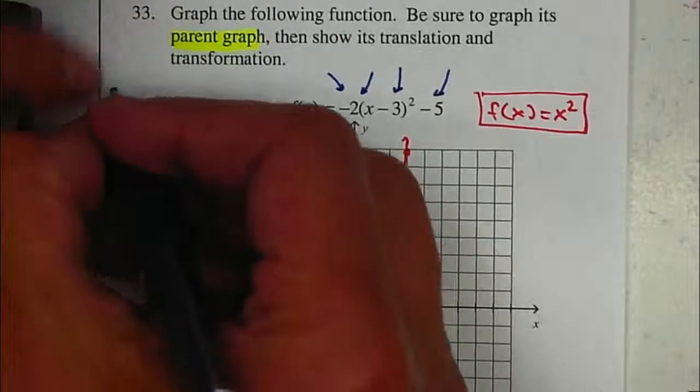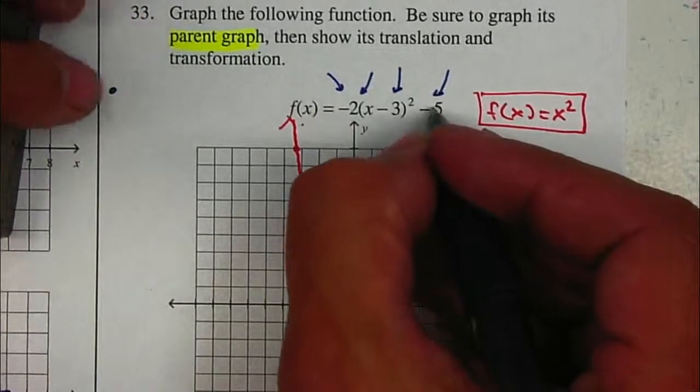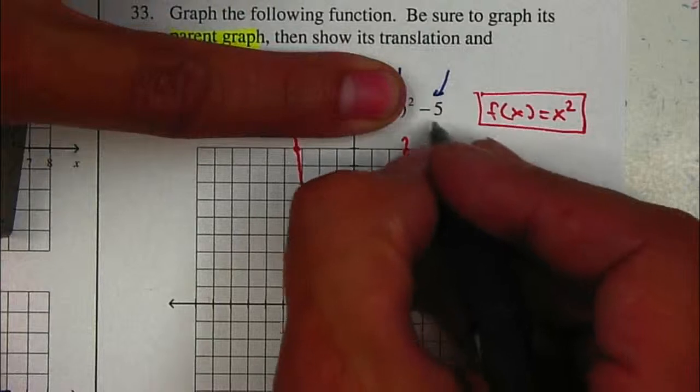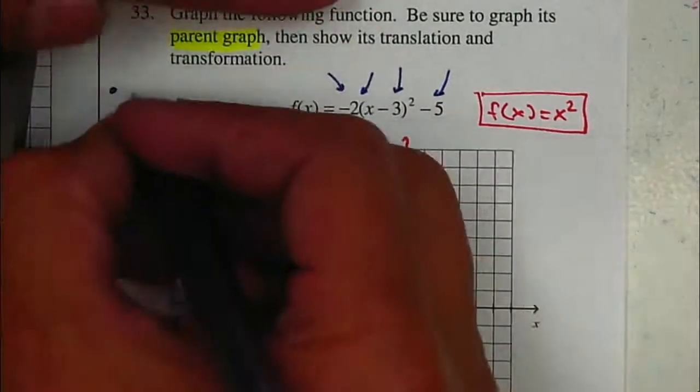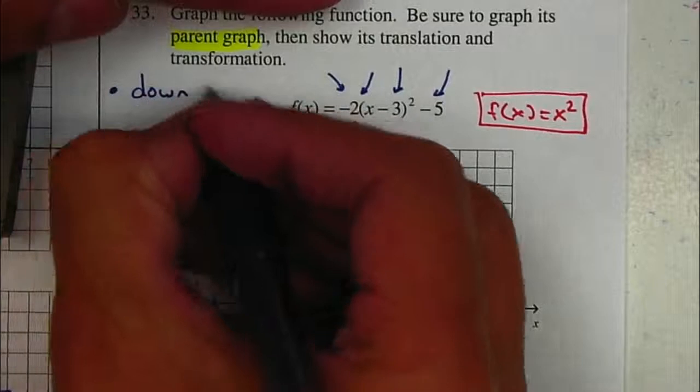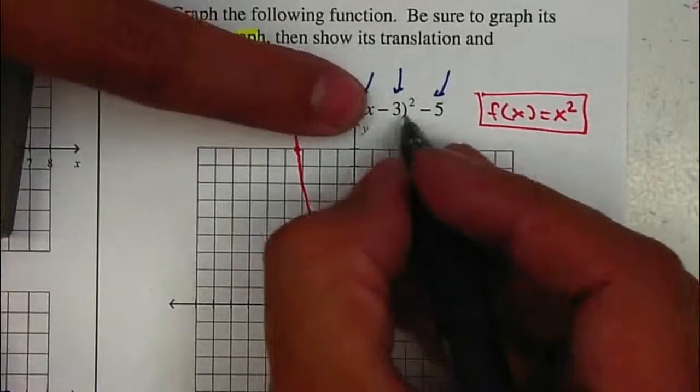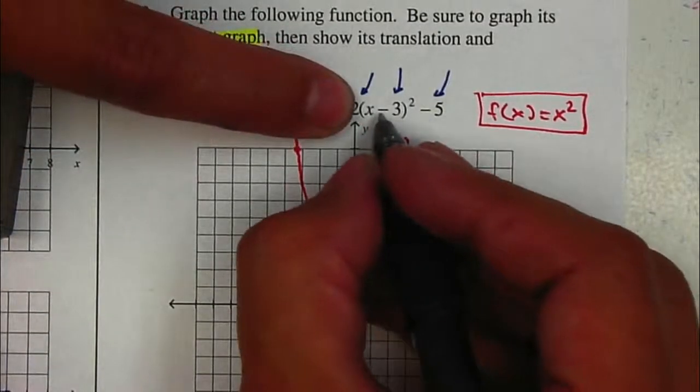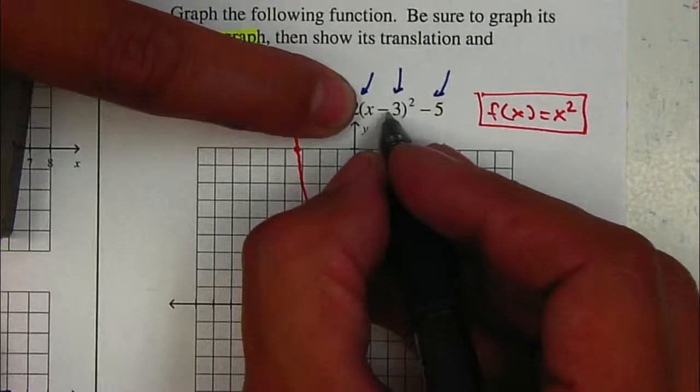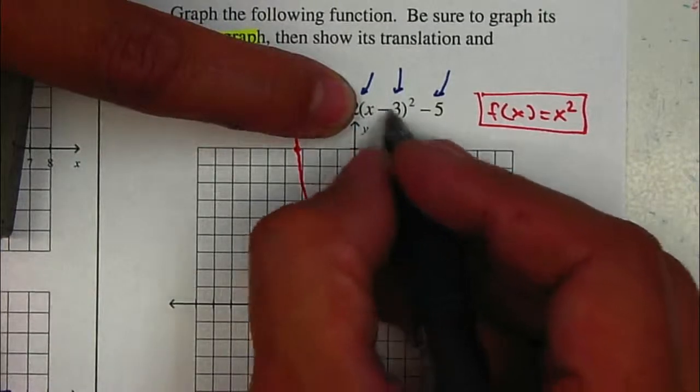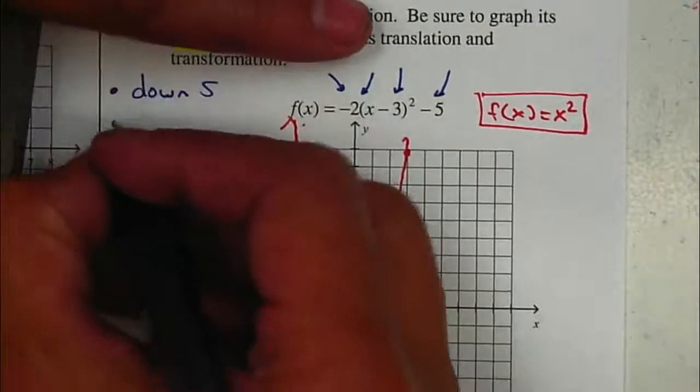So the first one, that's the -5. It's outside the parenthesis, so it will be shifting it up or down. Because it's subtracting, in this case it's negative, so it's going to be down 5. The -3 is inside the parenthesis, it's subtracting, so it's still going to be a shift. But in this case, it will be left or right. It's a -3, so it will be shifted to the right 3.